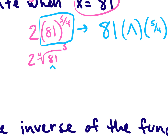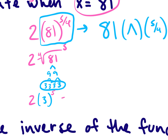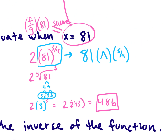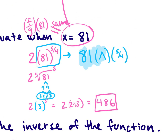We can also do it by hand. Factor 81 as 9 times 9, then 3 times 3 — grouping in sets of 4, we get 3 coming outside the radical. So it becomes 2 times 3 to the 5th power. Three to the 5th is 243, so the answer is 486. If you have questions about how to put this into your specific calculator, ask me when we're done with the review.